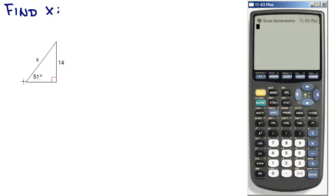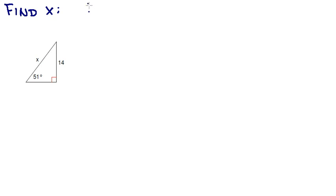Here's another example where we're finding a missing side of a right triangle — this time it happens to be the hypotenuse. So we're going to use our trig ratios again.